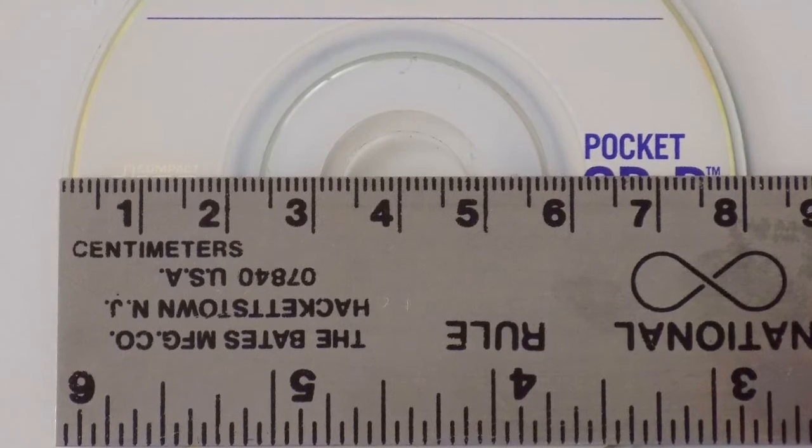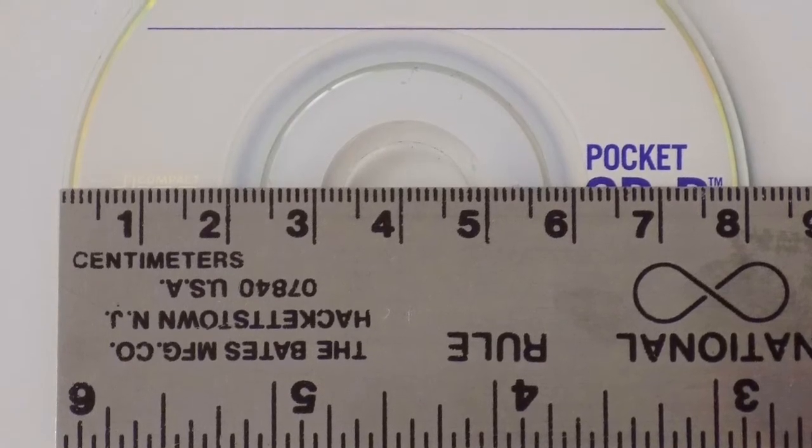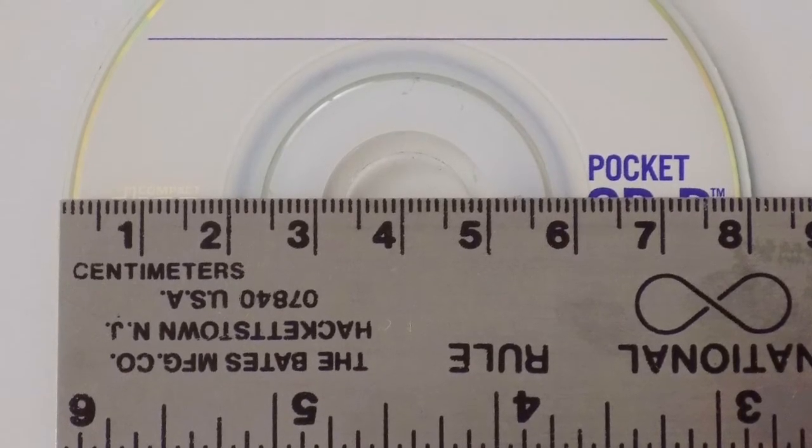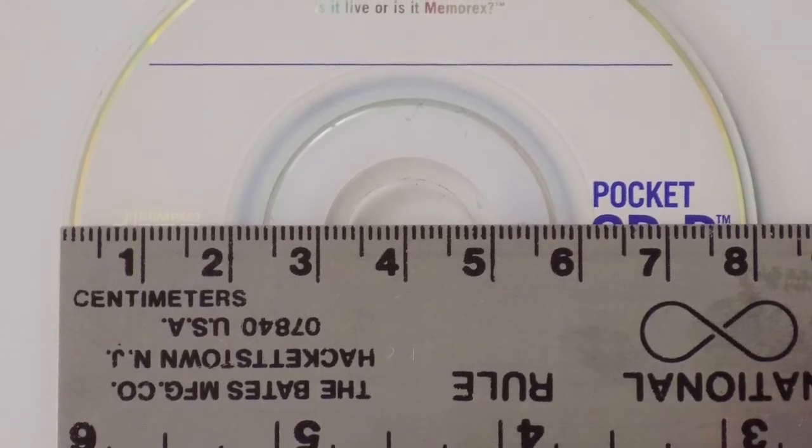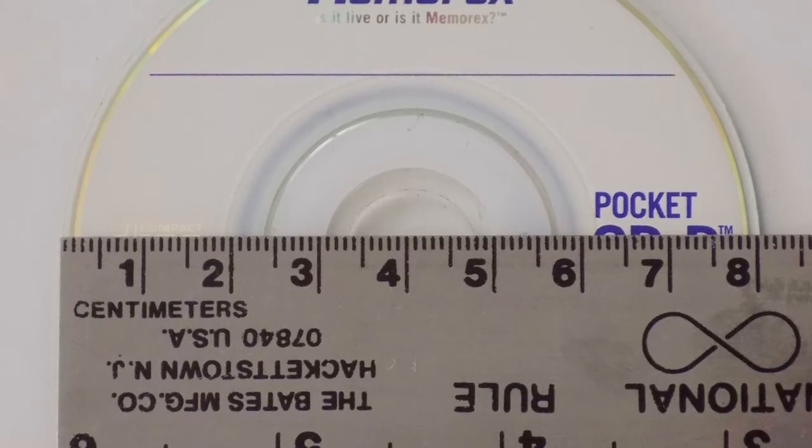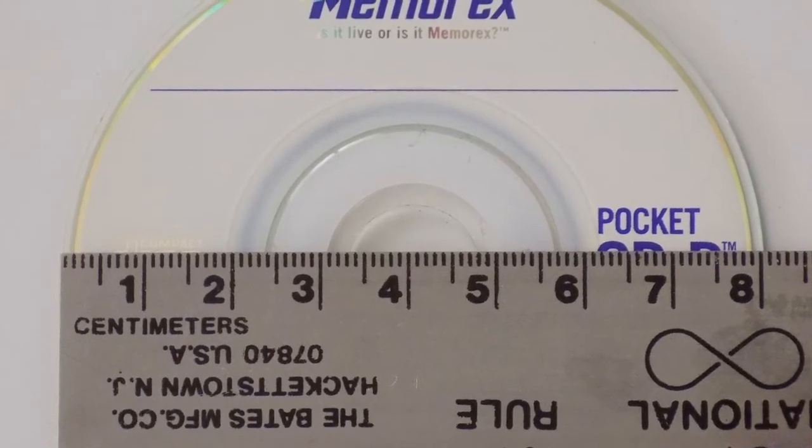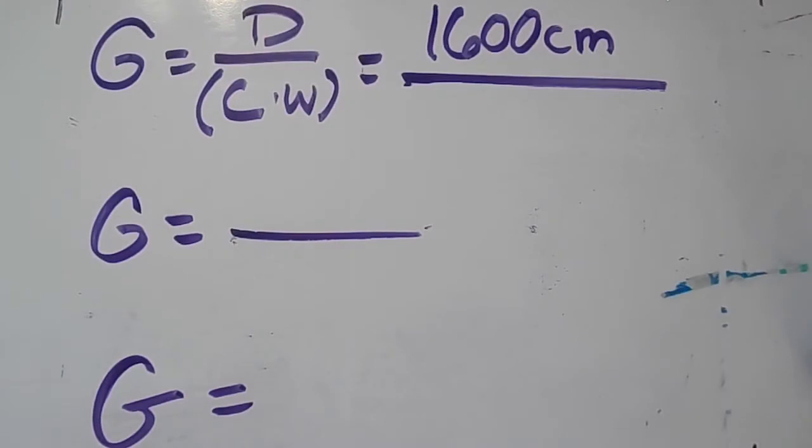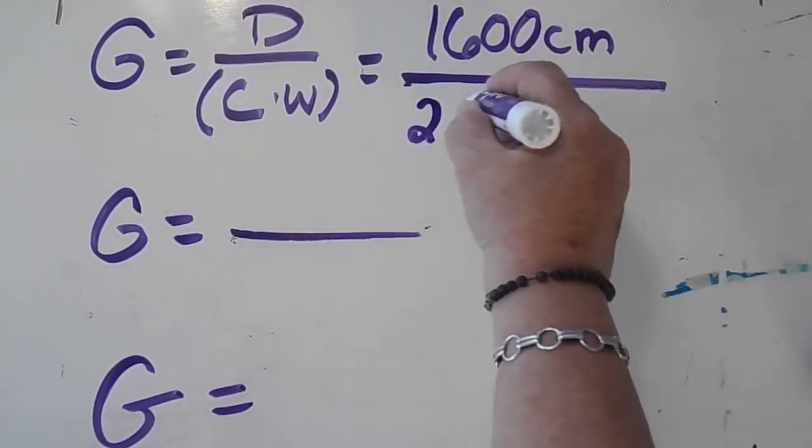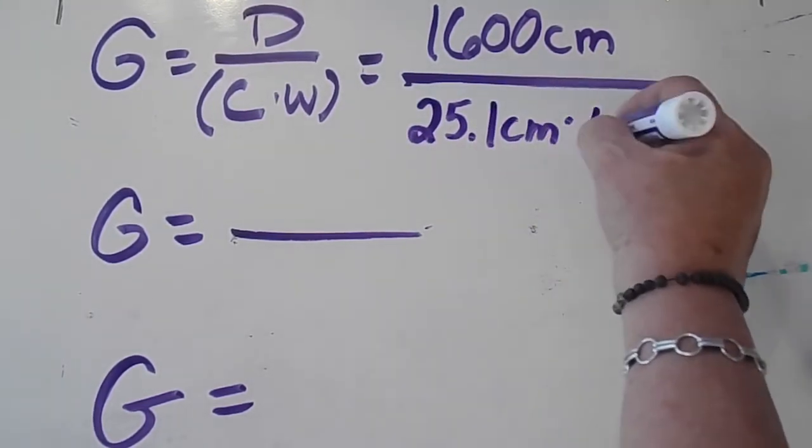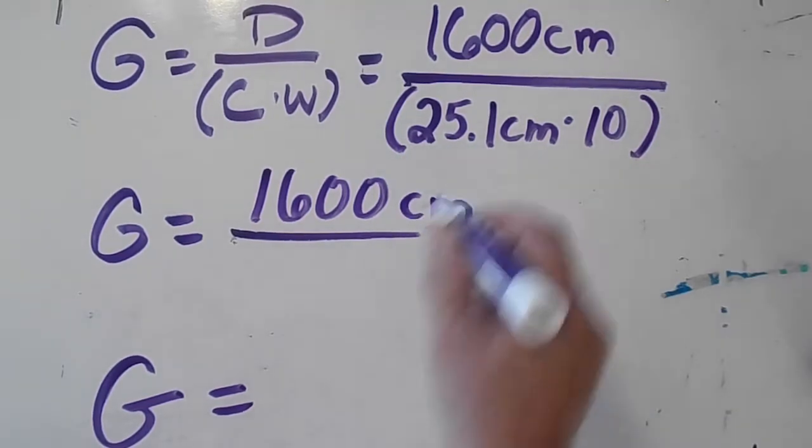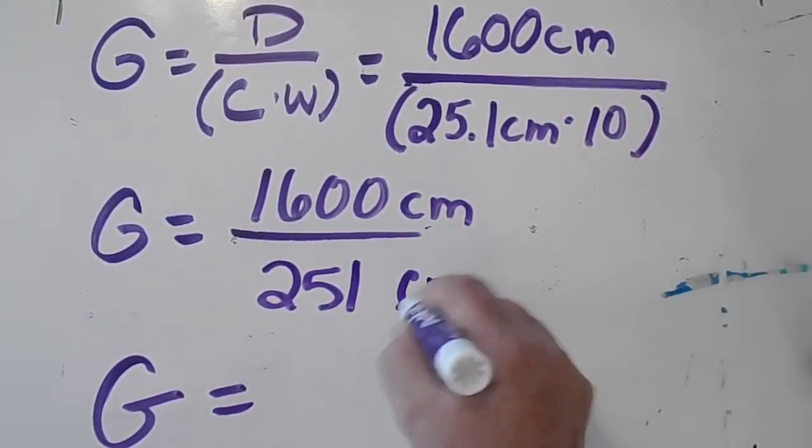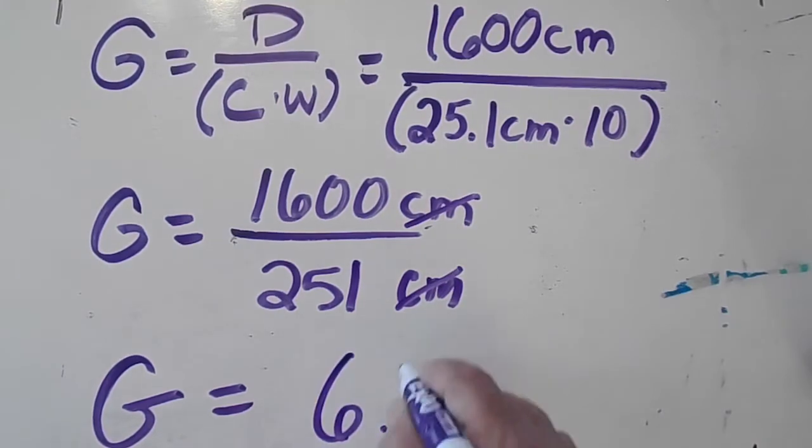Suppose you want to use a smaller drive wheel, such as a mini CD. The mini CD has a diameter of approximately 8 centimeters and a circumference of approximately 25.1 centimeters. To calculate the gear multiplier: G = 1600 cm ÷ (25.1 cm × 10) = 1600 ÷ 251 cm, yielding a gear multiplier of approximately 6.37, which is larger due to the smaller circumference of the mini CD wheel.